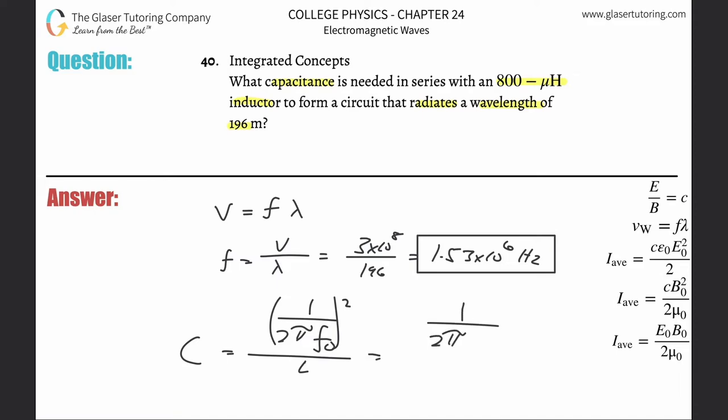Now there's 1 over 2 pi multiplied by that frequency we just found of 1.53 times 10 to the 6, square that whole thing, and then divide it by the inductance. Now that's 800 microhenry, but we need that in henry, so it's simply 800 times 10 to the minus 6.